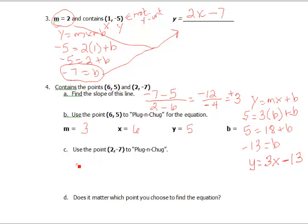If I choose the other point, I would have y equals negative 7 equals m, which is 3, times x, which is 2. Remember, this is my x, this is my y, plus b.